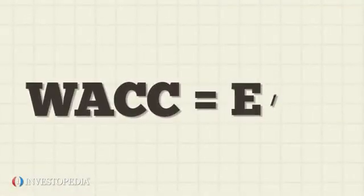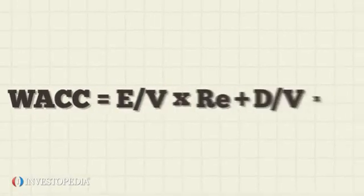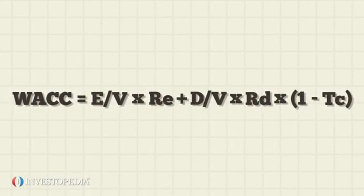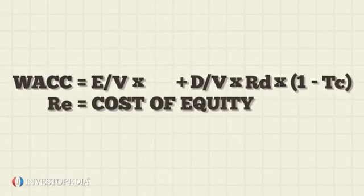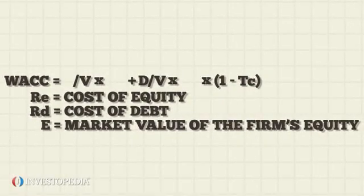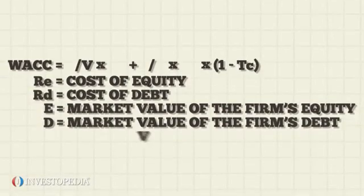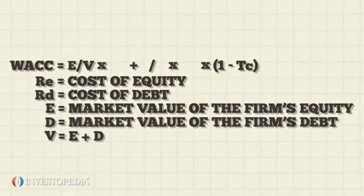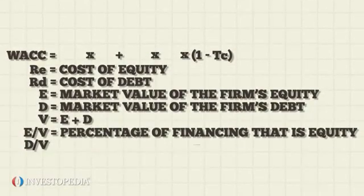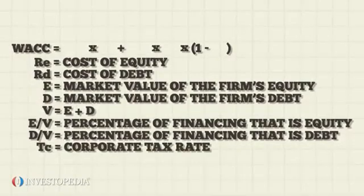The formula to calculate WACC is: WACC equals E over V times RE plus D over V times RD times 1 minus TC, where RE equals cost of equity, RD equals cost of debt, E equals market value of the firm's equity, D equals market value of the firm's debt, V equals E plus D, E over V equals percentage of financing that is equity, D over V equals percentage of financing that is debt, and TC equals corporate tax rate.